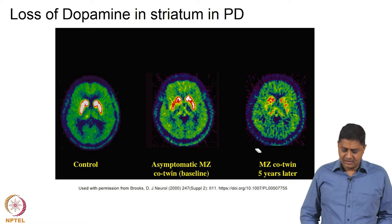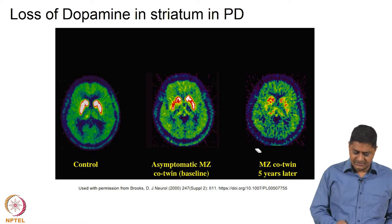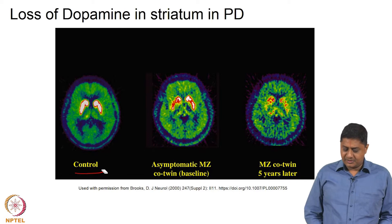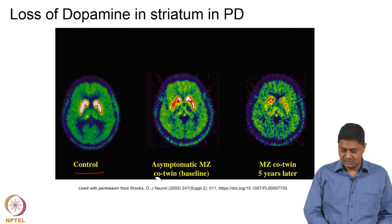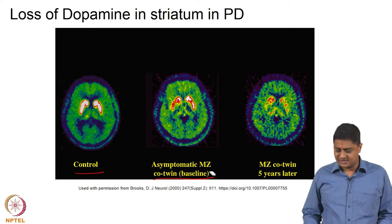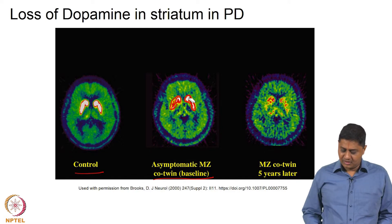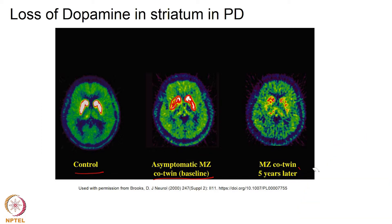Here is data from imaging that shows, in a control subject, the uptake of dopamine in the putamen. In a particular asymptomatic twin whose other twin has Parkinson's disease, there is reduced uptake of dopamine in the putamen. Five years later, this patient develops symptoms, and you find very little activation of the putamen compared with the control. This is data from Brooks and colleagues.